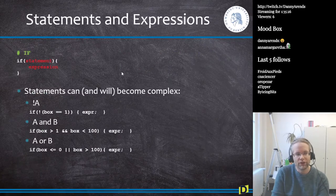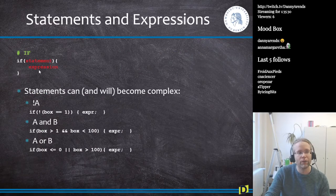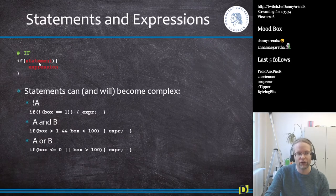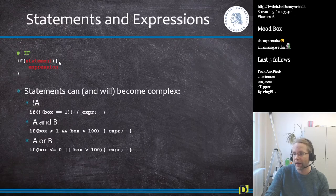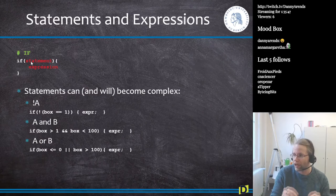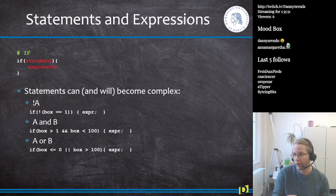In an if statement, for loop, or while loop, the condition being tested is called a statement, and everything within the curly brackets is called an expression. A statement always evaluates to true or false — this holds for both while loops and if statements.